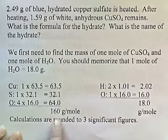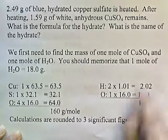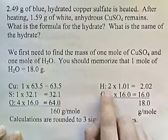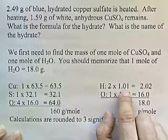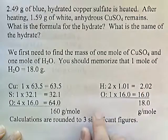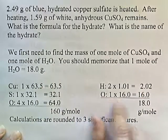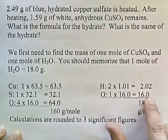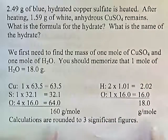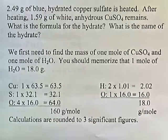This is rounded to three significant figures. For water, H2O: hydrogen — two hydrogens — hydrogen is 1.01, so we get 2.02. One oxygen, and oxygen is 16. Add it up, you get 18. These molar masses are rounded to three significant figures.